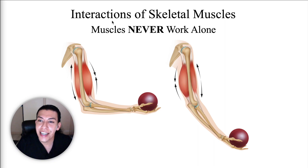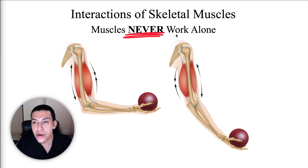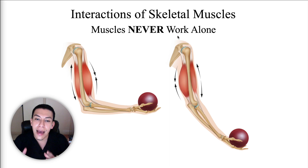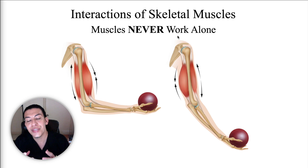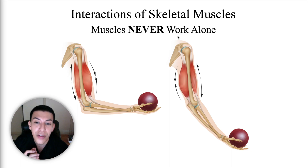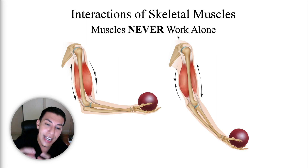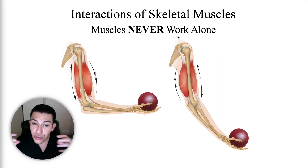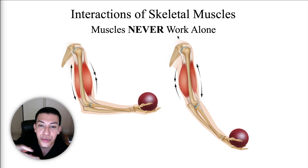Today we are going to cover the interactions of skeletal muscles. It's important that we understand that muscles never work alone. When a body part moves, there is a muscle responsible for that movement — that muscle is shortening. There are also muscles opposing that movement that are lengthening, muscles that help the prime mover, and muscles that anchor or stabilize a joint so movement occurs through its normal range of motion.